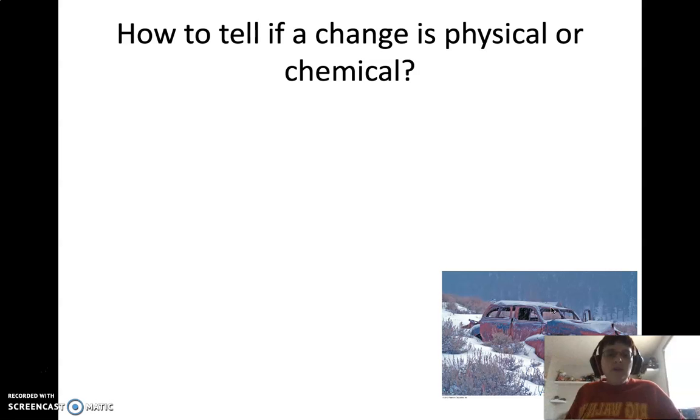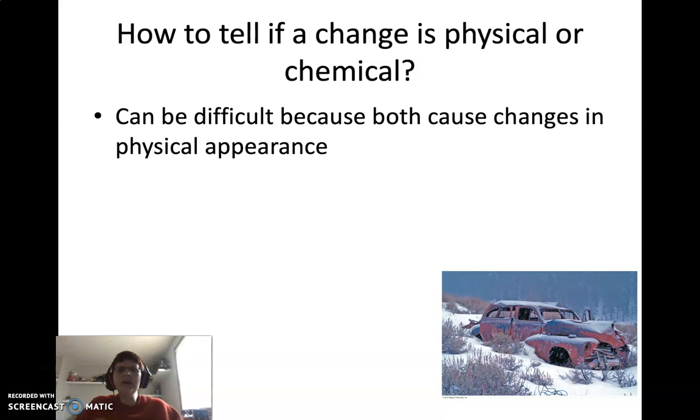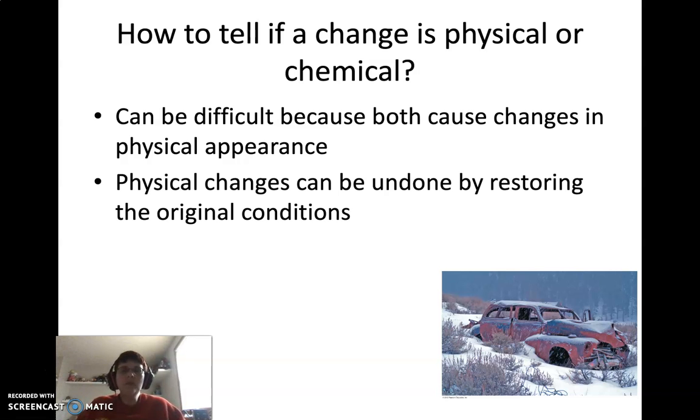So then the question is, how do you tell if a change is a physical change or a chemical change? Because sometimes it can be difficult to look at it and say that's a physical change, that's a chemical change. Because both of these cause changes in the physical appearance of the material. Chemical change is going to make new materials, but a physical change is going to change what the material looks like. So the big difference is physical changes you can undo by restoring those original conditions.